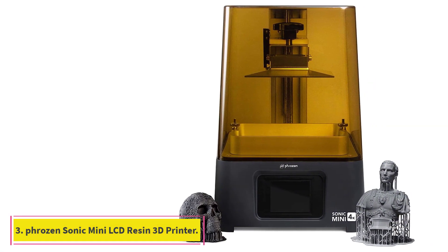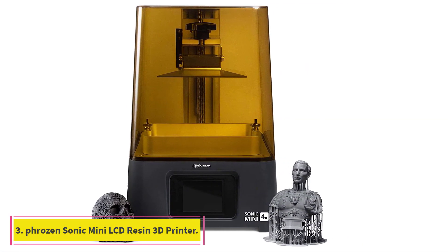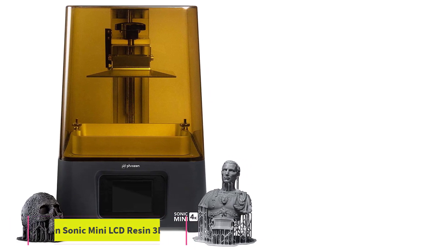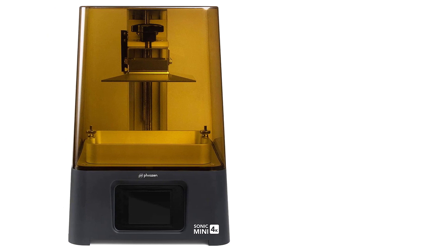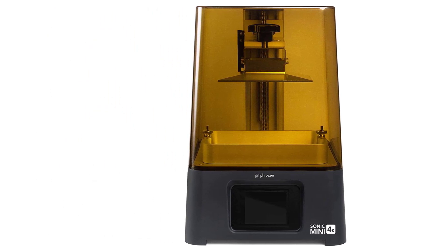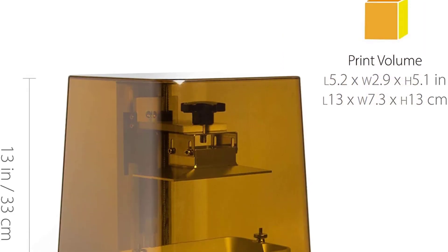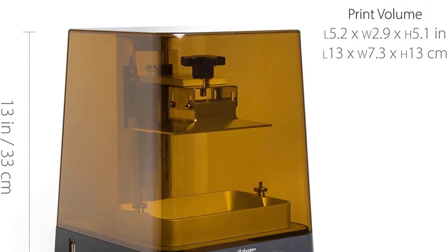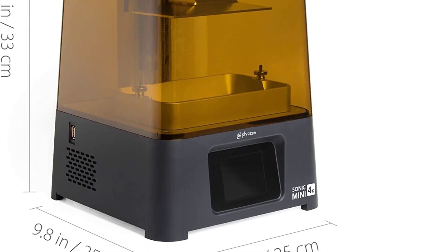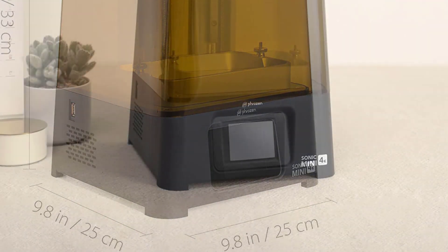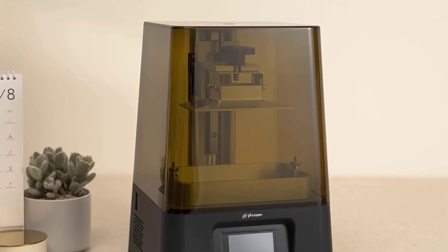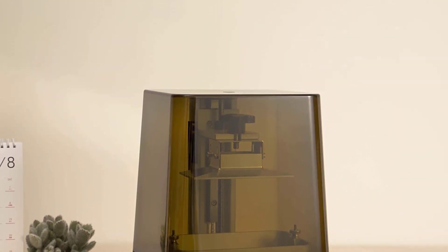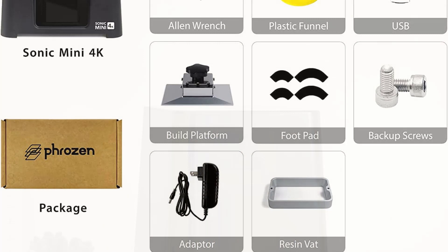At Number 3, Phrozen Sonic Mini LCD Resin 3D Printer. The Phrozen Sonic Mini 4K is a compact, small form-factor resin printer that aims to compete with the Elegoo Mars 3. The Sonic Mini 4K comes with a 4K mono LCD as its main highlight, along with a decent build volume. The 3840x2160 pixel LCD screen results in an impressive 722 ppi, giving you one of the highest XY resolutions of 35 microns.